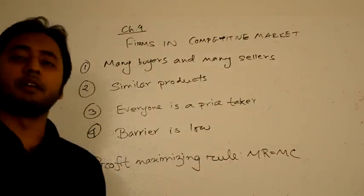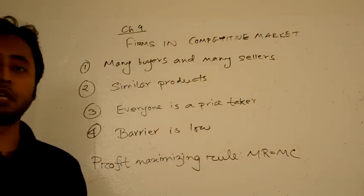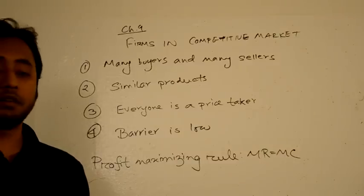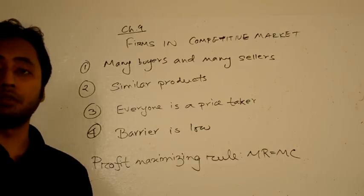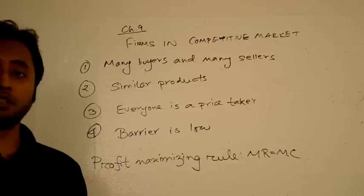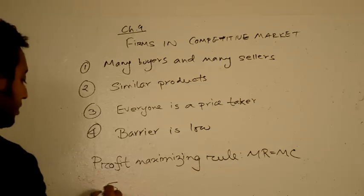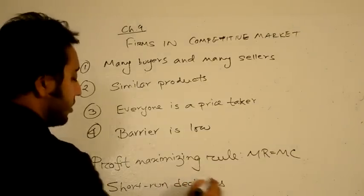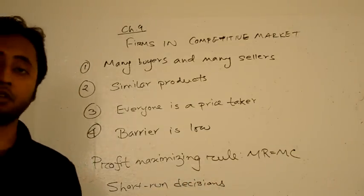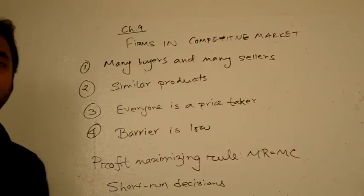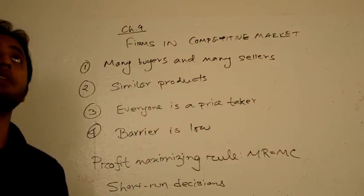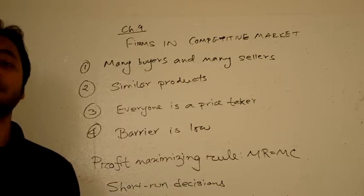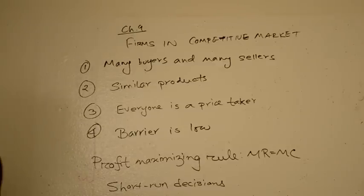In the market, not every firm can actually make profits — sometimes they make losses. The question is, when they make losses, what do they do? They have two options: either they continue their production or they just shut down temporarily. These are short-run decisions. Either you continue operation or you go out of the market. We are going to analyze those decisions today.